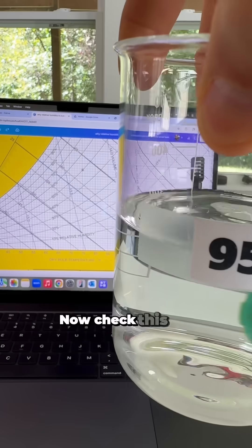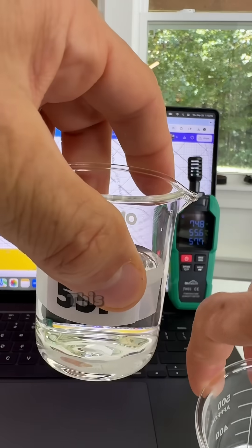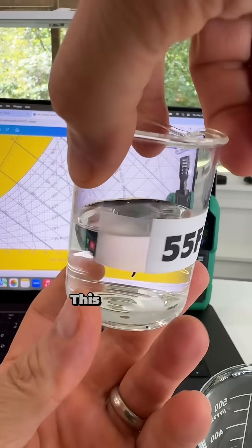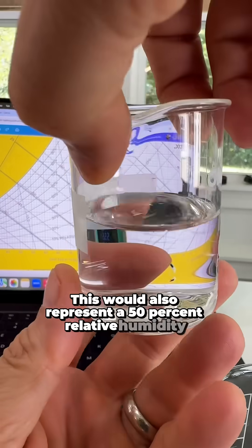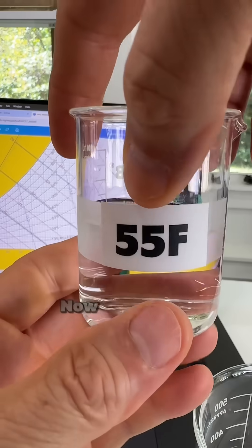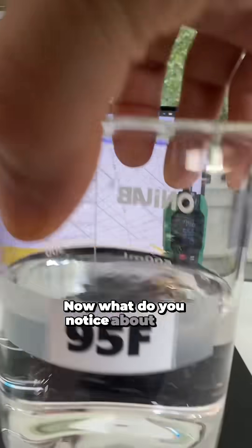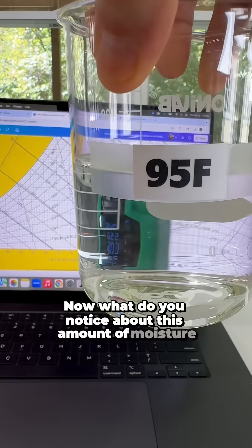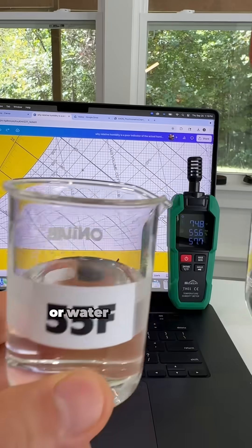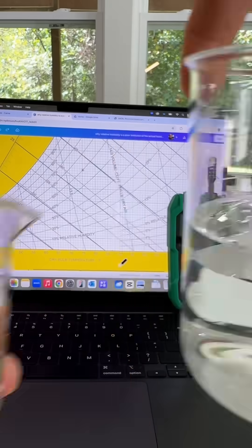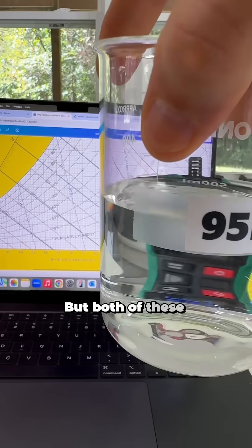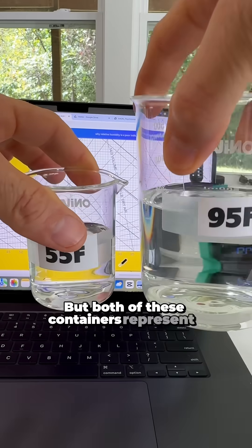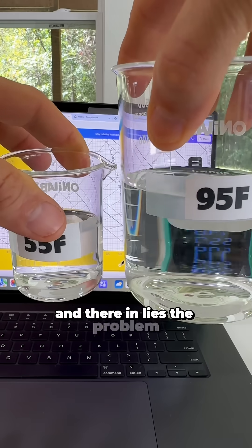Now, check this out. This would also represent a 50% relative humidity condition. Now, what do you notice about this amount of moisture or water compared to this? Well, there's a lot more here. Duh. But both of these containers represent 50% relative humidity, and therein lies the problem.